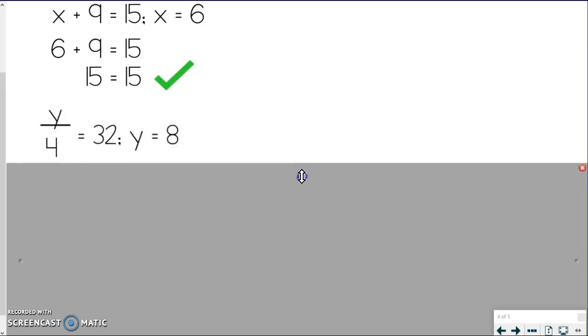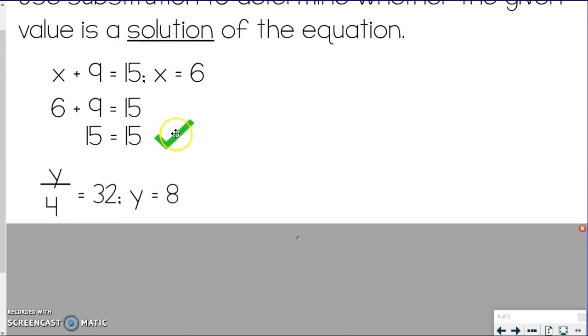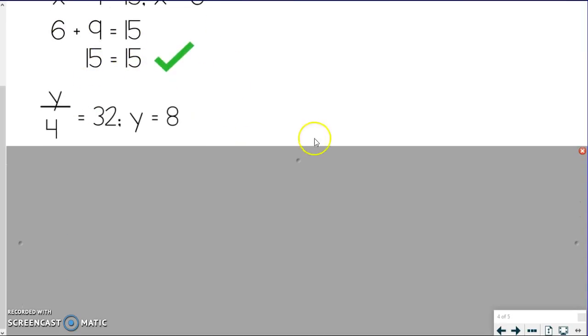But moving on to the next one, we've got y. And remember, it's y over 4, but really we could say y divided by 4. That fraction bar means division. So we got y divided by 4 equals 32. And we're trying to decide if y equals 8 would be a solution to the problem. And I'm sorry, let me back up for just a sec. So us putting this check mark means that 6 is the solution for x, by the way. Like it is the solution for our equation. So we're not just saying yeah, we did the problem correctly. We're saying that 6 did make both sides equal. And so that's why it's a solution.